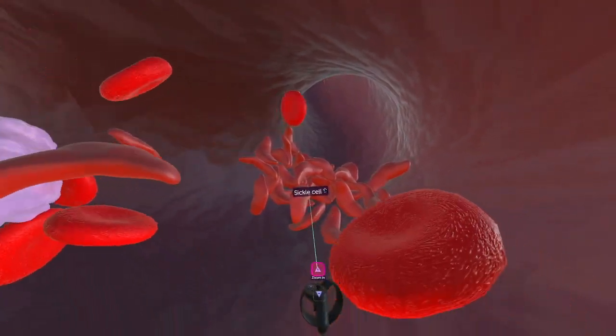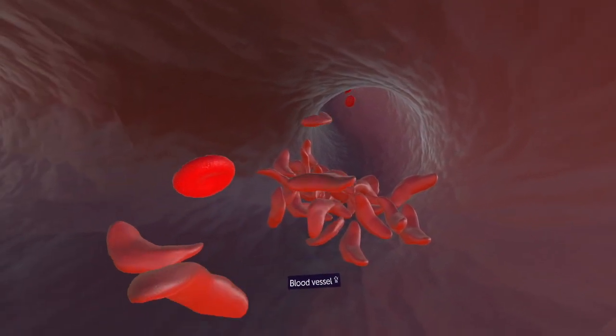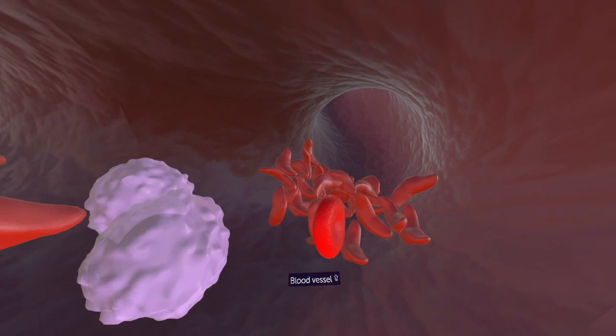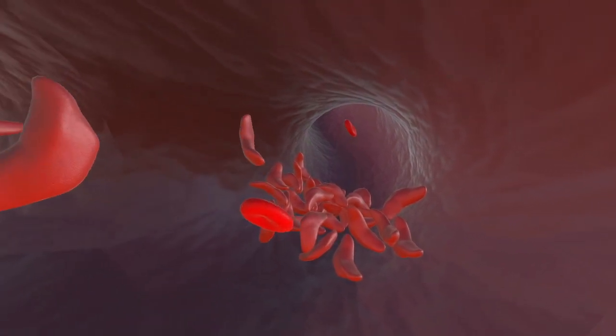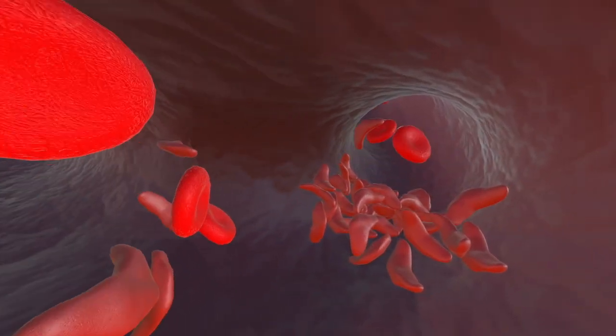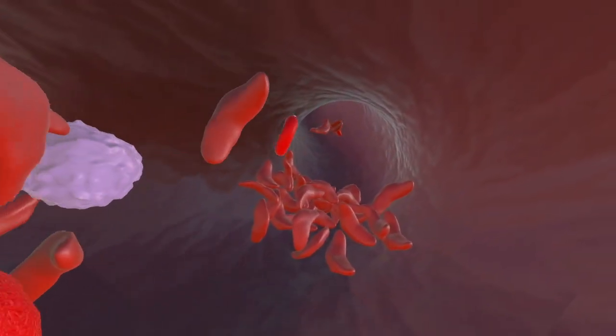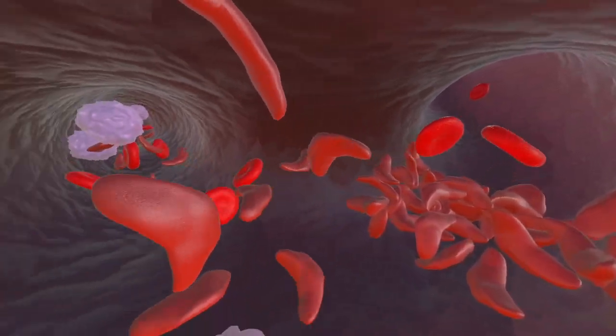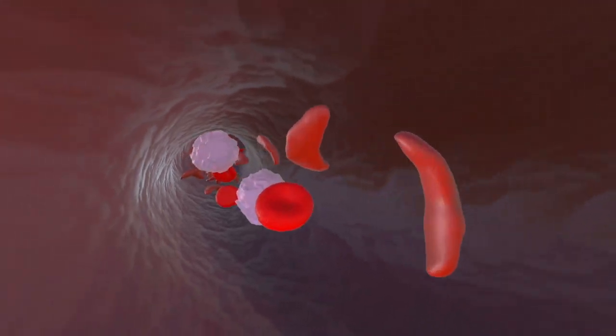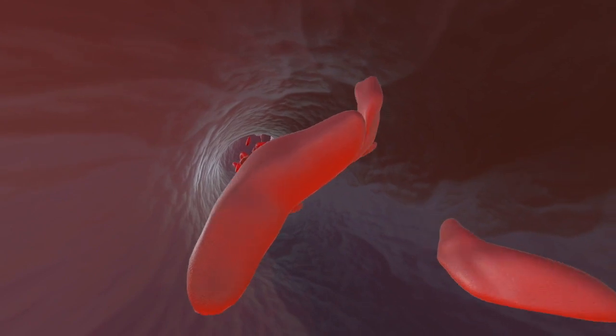This is blocking blood flow to that area. This is what happens in real sickle cell patients - their blood cells are misshapen so they get stuck, and other cells carrying oxygen are not able to get to tissues and deliver oxygen. This causes damage to the tissues and a lot of really horrible pain. This is also a cool environment where you can turn all the way around and see the blood coming from behind you.